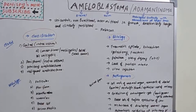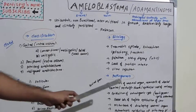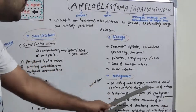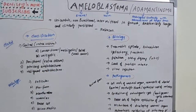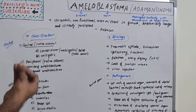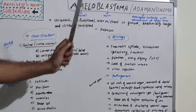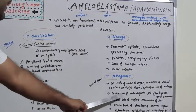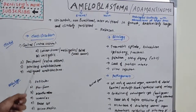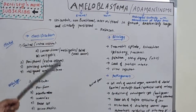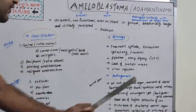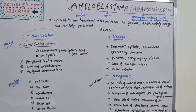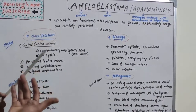In pathogenesis, it is believed to derive from cell rests of the enamel organ, remnants of dental lamina, Hertwig's sheath, epithelial rests of Malassez, or epithelium of odontogenic cysts — most commonly the dentigerous cyst — and odontoma. It could also arise from basal cells of the surface epithelium of the jaw, disturbance of the developing enamel organ, or heterotopic epithelium of the pituitary gland.